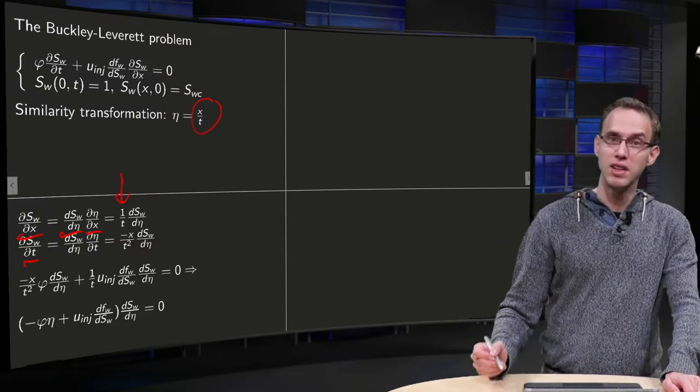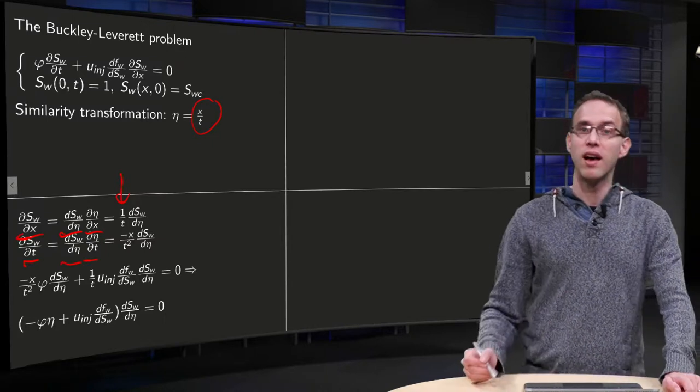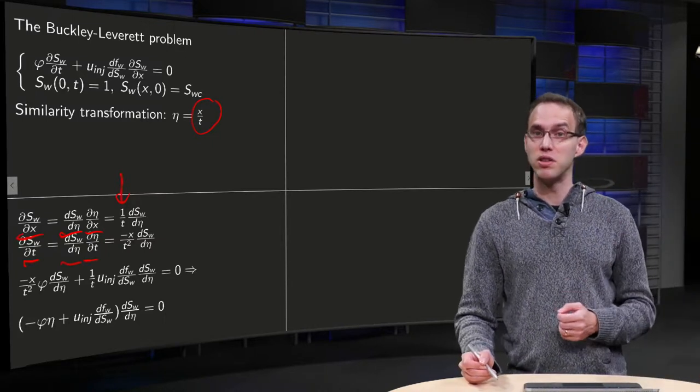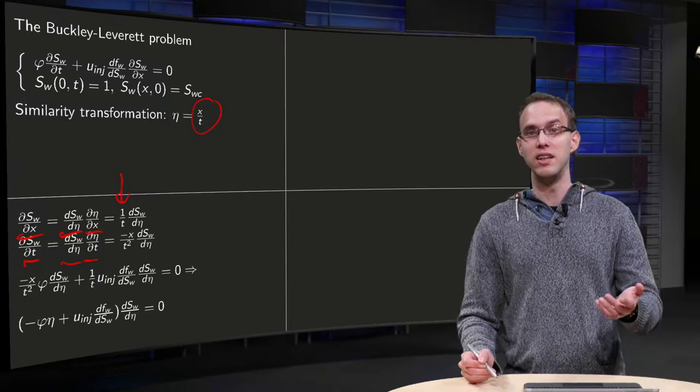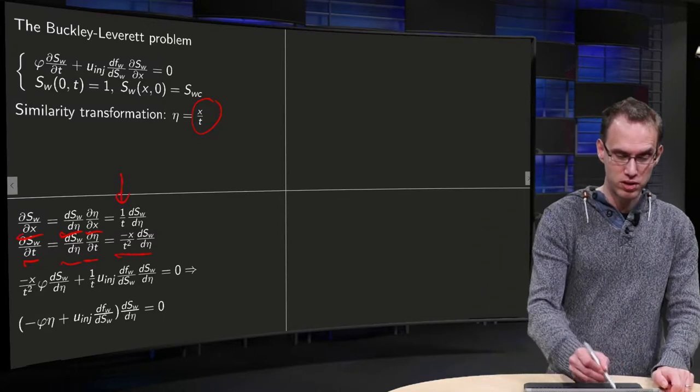Similarly, for ∂Sw/∂t it becomes ∂Sw/∂η times ∂η/∂t. And η equals x times t to the power minus 1, so ∂η/∂t becomes x times minus 1 t to the power minus 2, as we see over here.